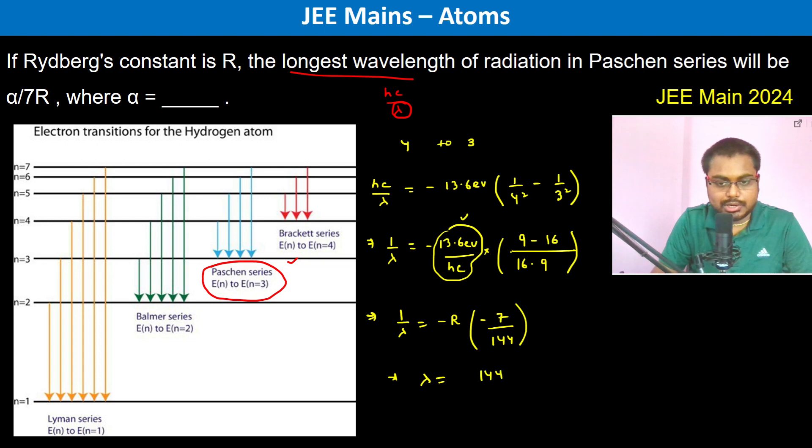144 divided by 7R. So therefore alpha is going to be 144.